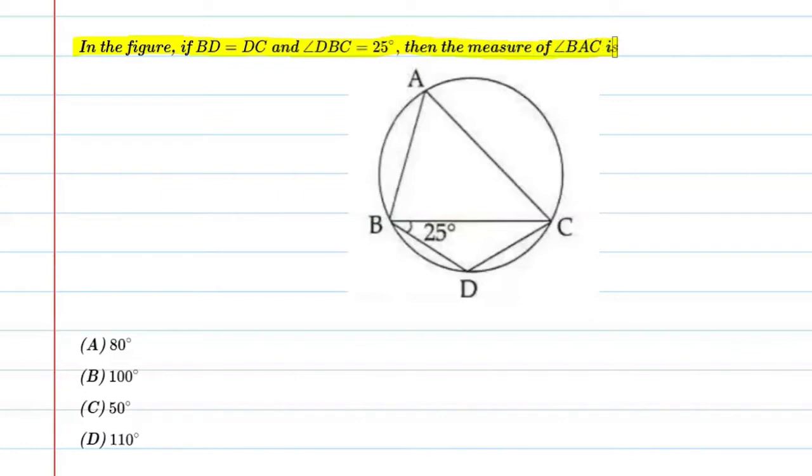Alright, so basically in this question there is a circle and ABCD. This is a form. So we have said that BD is equal to DC. It is given. And this angle DBC is equal to 25 degrees. So we are asking what is the angle BAC value? So let's start this question.